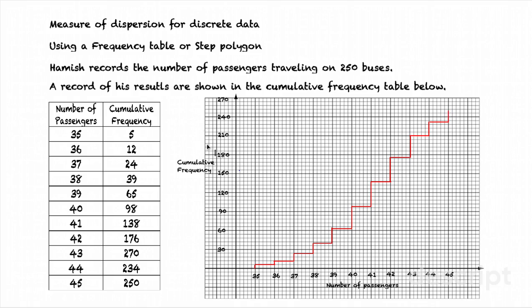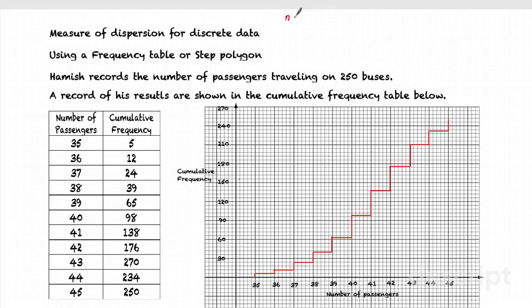Now I have the step polygon. I'm going to show you how to use it to find the measure of dispersion of this discrete data. And in particular, here, we're going to look at the interquartile range. Now, N here is 250. That's how much data I had.